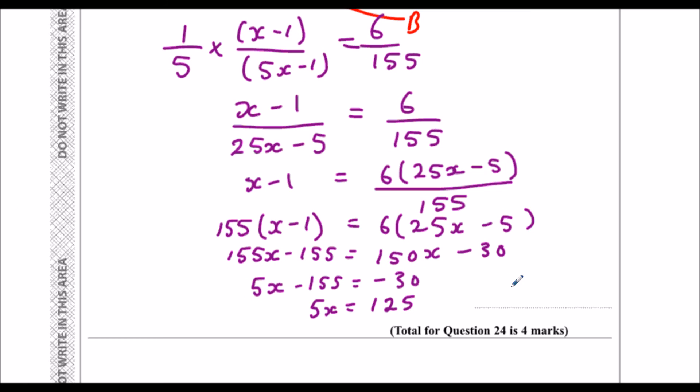So the number of red counters, which I called x, is equal to 25. So there were 25 red counters.